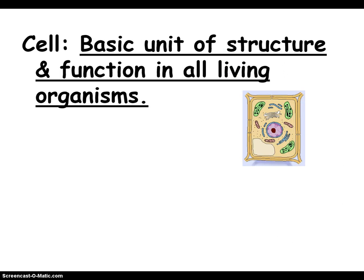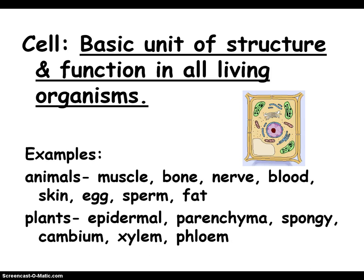So everything starts with a cell. It's the smallest and most basic living unit. Some examples would be bone cells and nerve cells. In plants we have xylem cells, cambium cells, and spongy cells. You're going to recognize these by seeing a single thing in a picture — one thing by itself, usually small, with lots of little stuff inside.